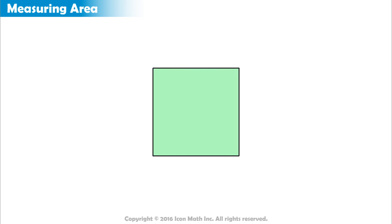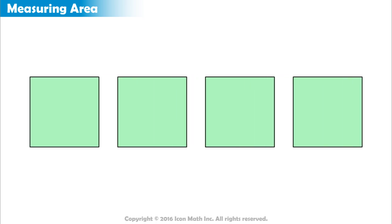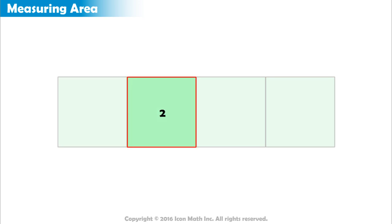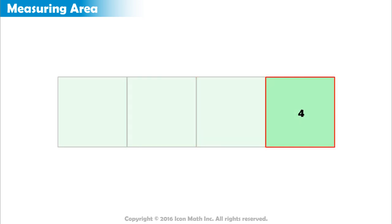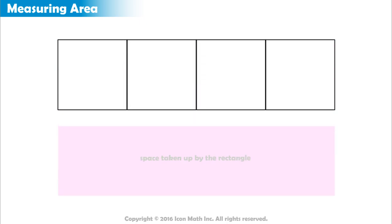Suppose we make three copies of this square and arrange all four squares side by side. The bigger shape is now a rectangle made up of four equal squares. The combined shaded region shows the amount of space taken up by the rectangle.